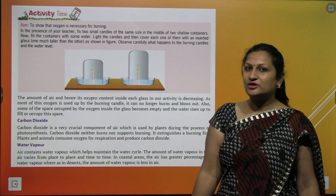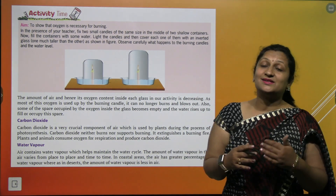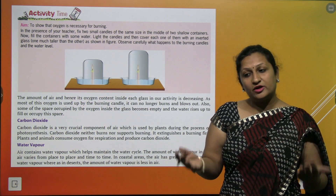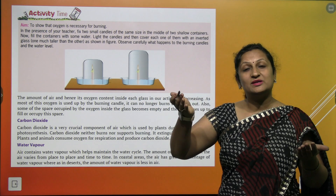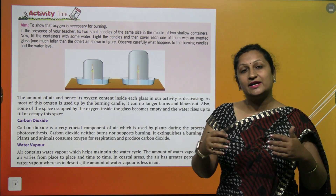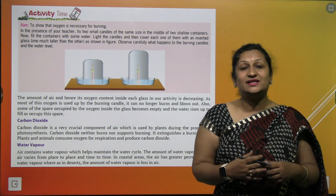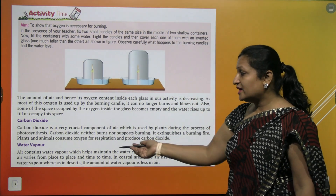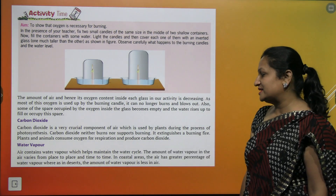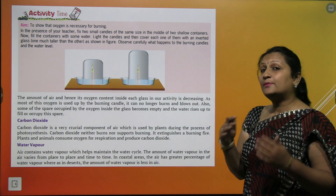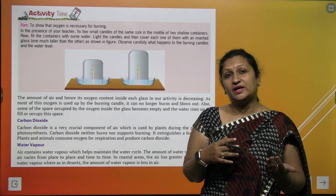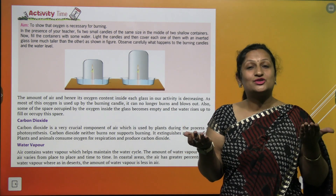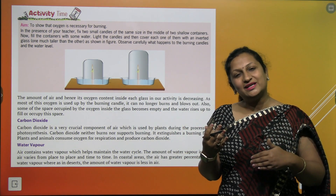Air also contains water vapour. This water vapour is very essential for the maintenance of the water cycle. Water neeche se evaporate hota hai, oopar ja ke clouds bante hain, clouds vaapas se rain karte hain — rain hamare liye aur hamare fields ke liye important hai. Therefore, air contains water vapour which helps to maintain the water cycle. Aap coastal areas mein, wahan ki air mein more amount of water vapour hoga, because sea present hai aur wahan evaporation zyada ho raha hai.